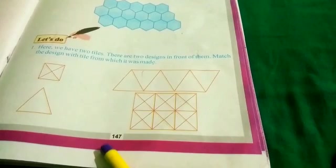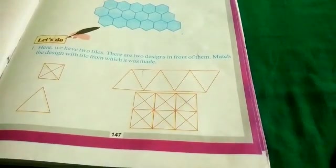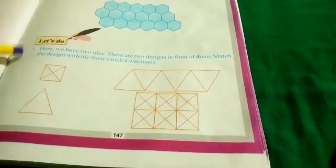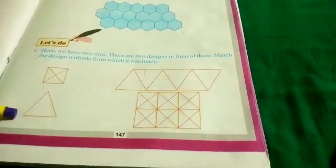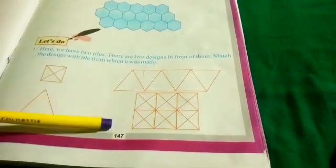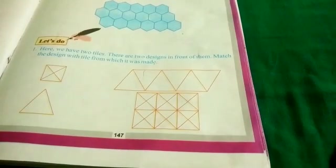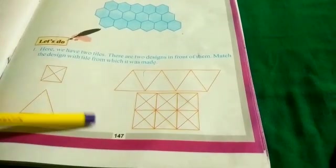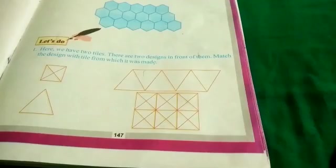Your homework is on page number 147. First sum is, two types of tiles are given here and in front of these tiles, two designs are given. You have to match the design with the tile from which it was made.